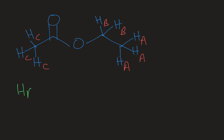So let's start with HA. HA would be a triplet because it has two neighbors. Now let's go on to HB. HB would be a quartet because it has three neighbors, those HA's.